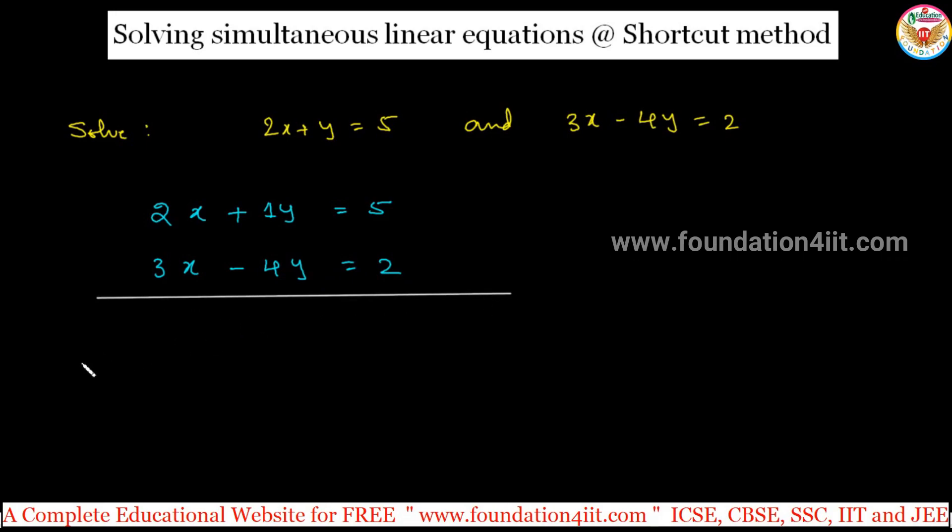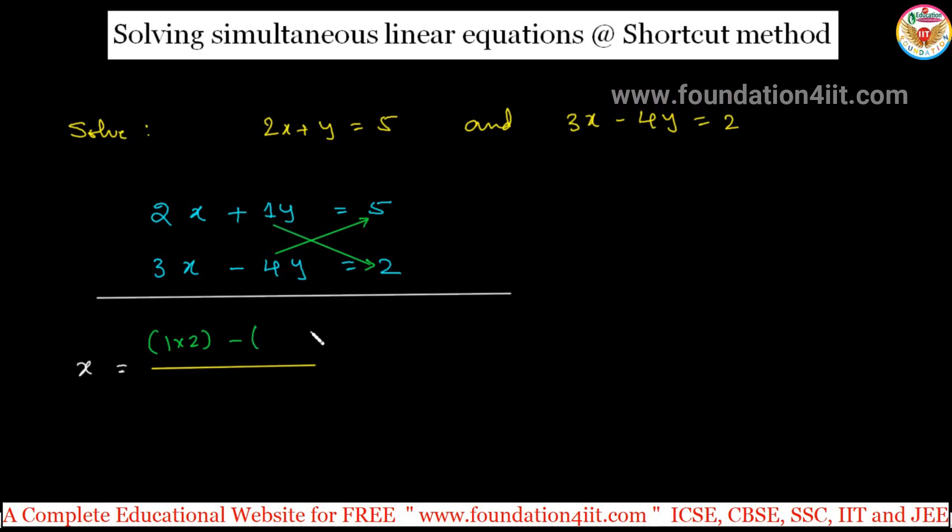To find out the value of x, first step, y coefficient. Always remember constant should be RHS, x and y terms on LHS side. Take the number 1 multiply with 2, next take minus 4 multiply with 5. The y coefficient is 1 and constant you multiply. So 1 into 2, again minus 4 into 5. Formula minus in between, 1 into 2 minus these both, product of these both. This is the numerator.